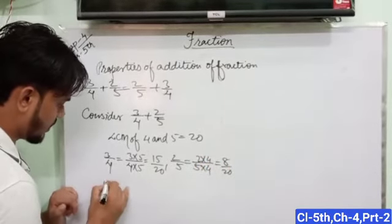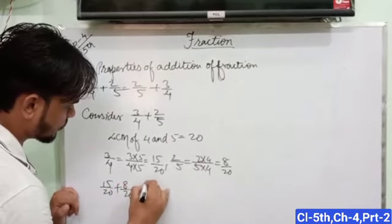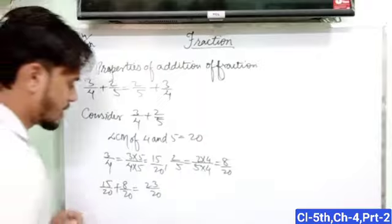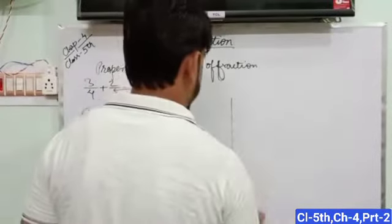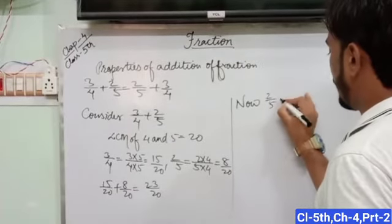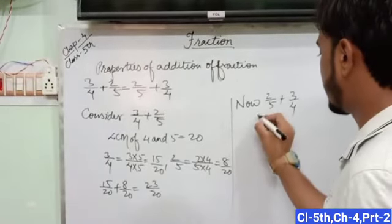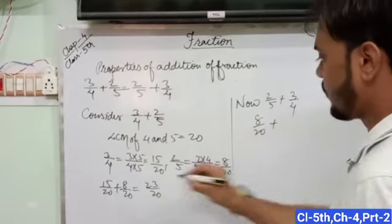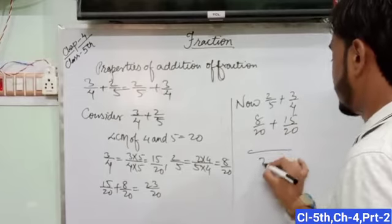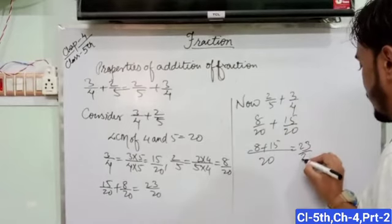Now write 15 upon 20 plus 8 upon 20, which equals 23 upon 20, or 1 and 3 upon 20. Now again, consider 2 upon 5 plus 3 upon 4. 2 upon 5 means 8 upon 20, and 3 upon 4 means 15 upon 20.